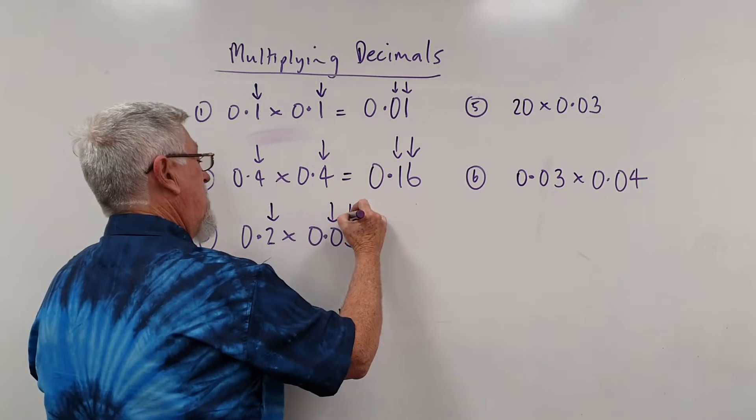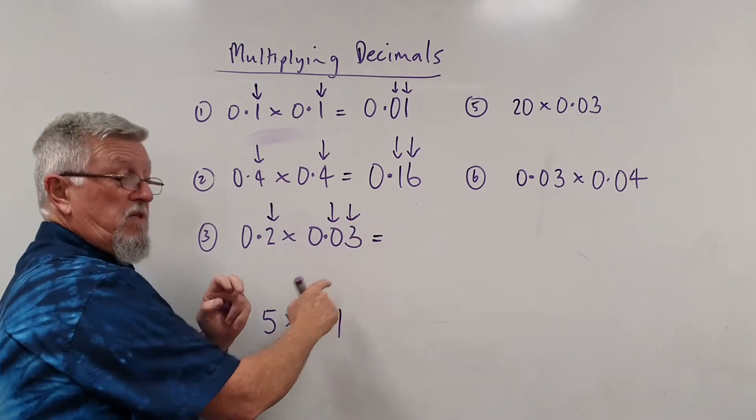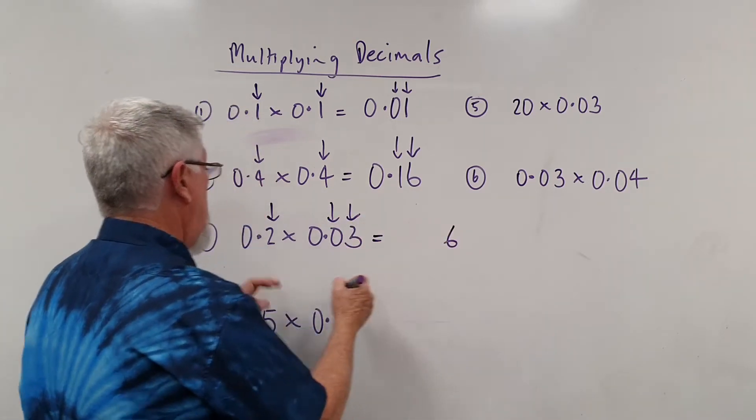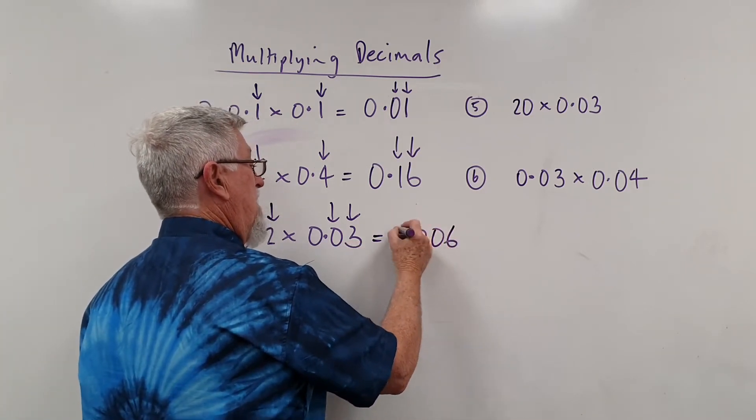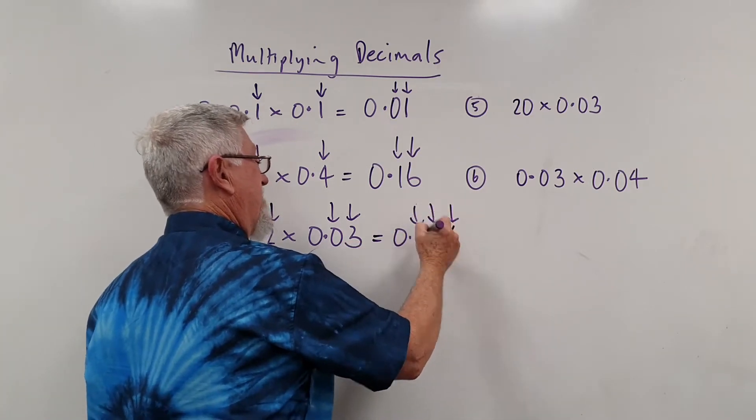I've got one, two, three... two threes. Ignoring the decimals, it is six, and I've got one, two, three decimal places. So one, two... one, two, and I haven't gone far enough in a minute.